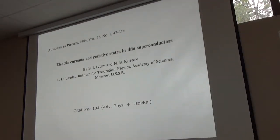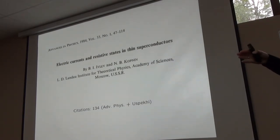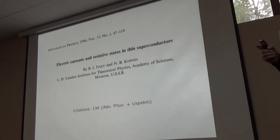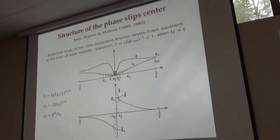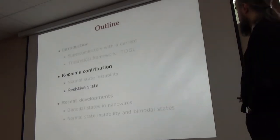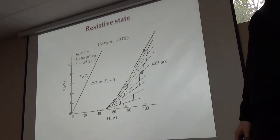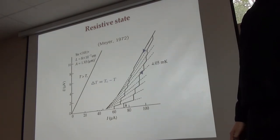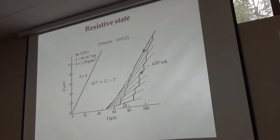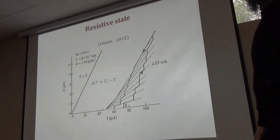The current-voltage characteristic is sensitive to the length of the wire. For a sufficiently short wire you can see the appearance of the first phase slip center, then two of them, and so on. For sufficiently long wires, even with one phase slip center always present, you can obtain the same situation, because if you increase the current you increase the frequency of phase slips. You can change either the number of phase slip centers or the frequency of phase slips.